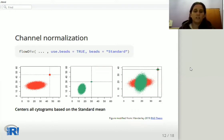FlowDiv's position in the cytograms depends on the instrumental settings. So FlowDiv centers all cytograms based on their standard mean.